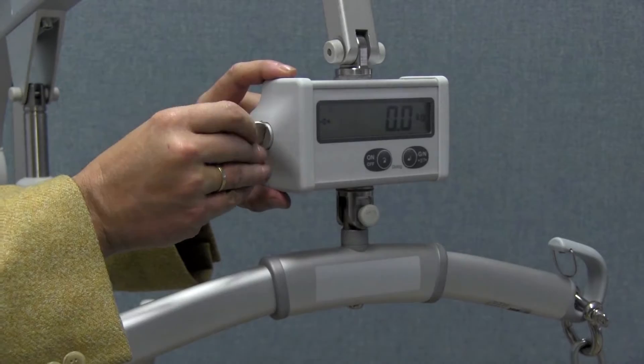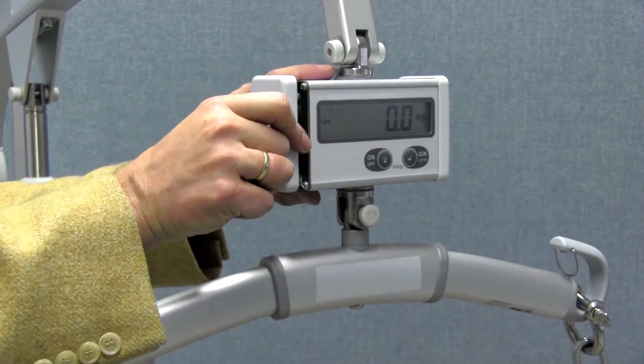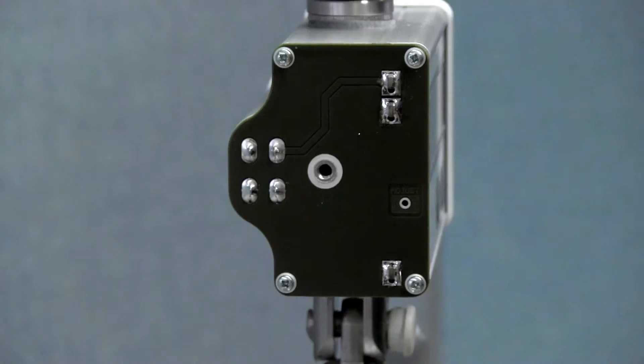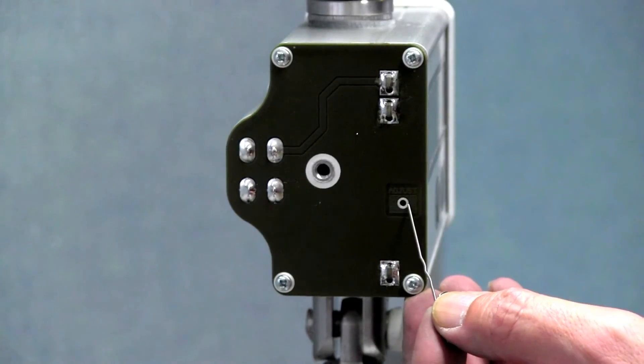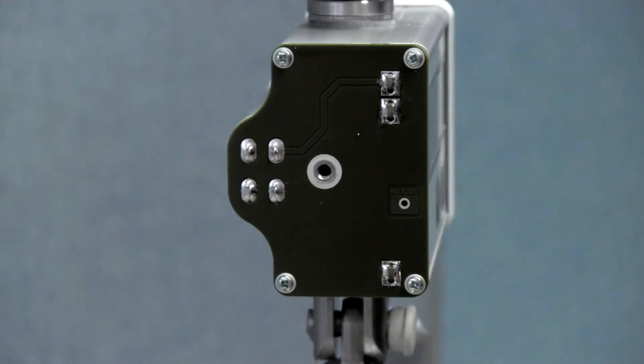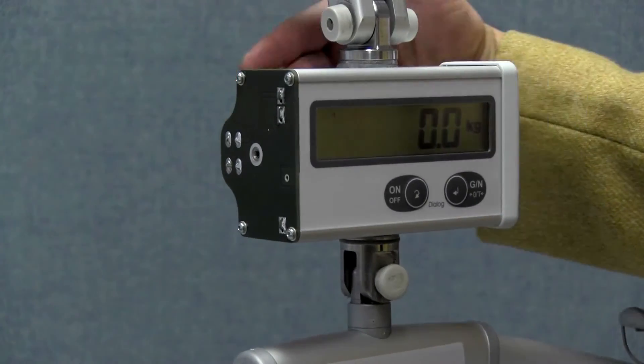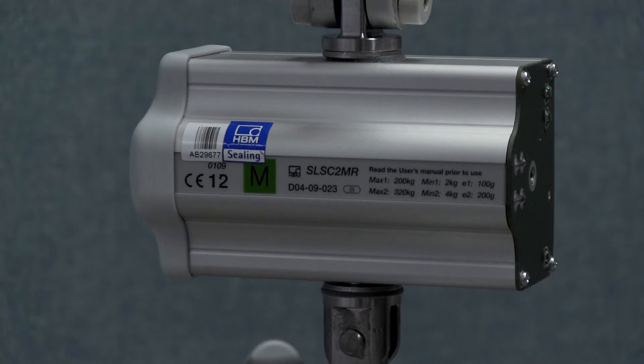Now I will use the coin to unscrew the side cap of the sling scale. You can see the hidden button which has to be pressed to make the setting. We can also see the parameters that have to be set on the back of the scale.